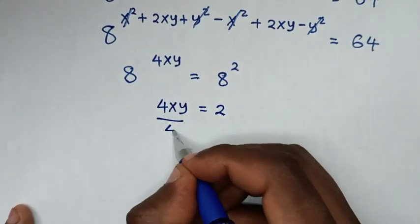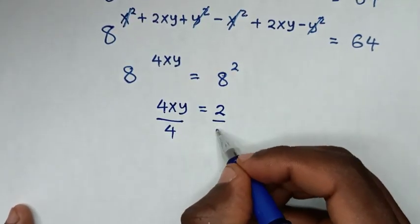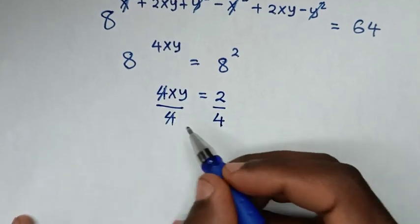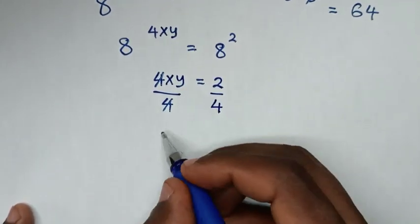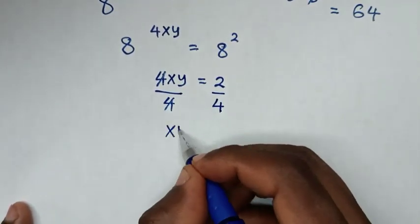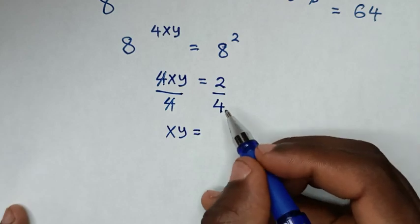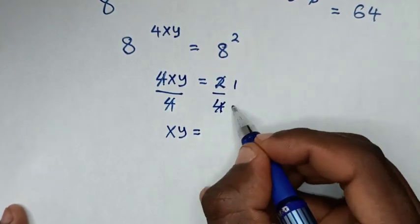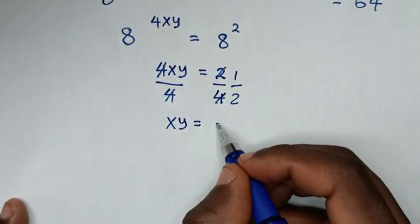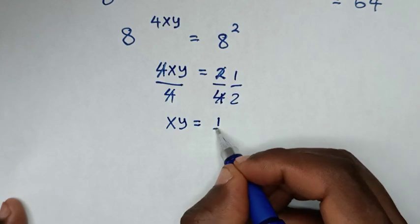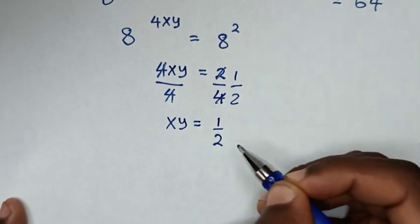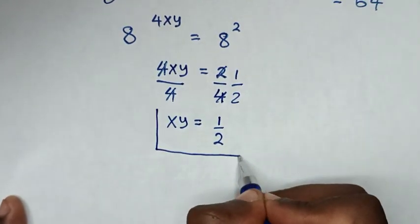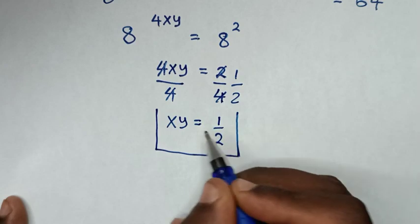Then we divide by 4 on both sides. So this and this will cancel. So it will be xy is equal to — simplifying 2 over 4 — xy is equal to one half. Therefore, this is our final answer.